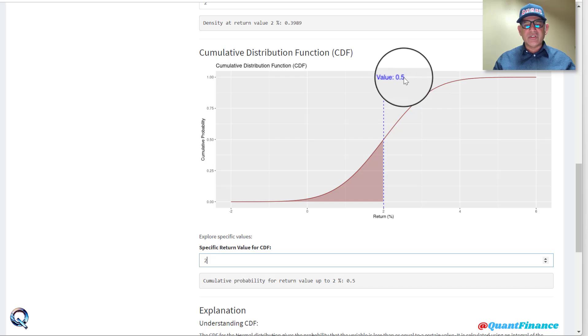Which is 50%. So what does it mean? The cumulative probability for return up to two percent is 0.50.